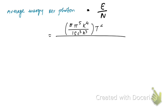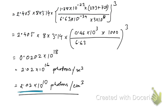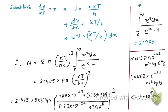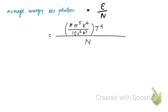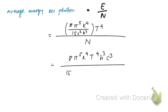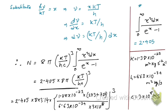Dividing the energy expression by n, instead of substituting the numerical value of n directly, we substitute the full expression for n so that several terms will cancel. This gives us 8π⁵k⁴T⁴ / (h³c³) in the numerator, divided by 15 c³ h³ k³ T³ × 8π × 2.405.